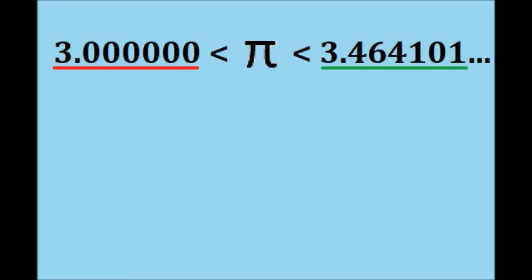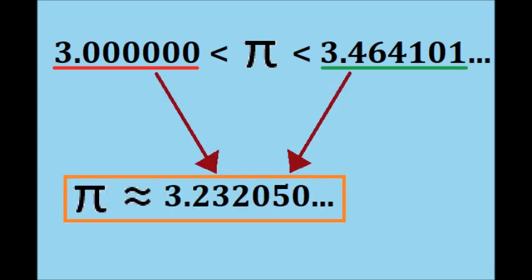Before we conclude, let's revisit these values. The red is our inner perimeter, the lower bound, and the green is the outer perimeter, the upper bound. Knowing that pi is approximately 3.14, it makes sense that it falls between these two bounds. If we average the values, our estimate for pi is approximately 3.23. That's not quite what we're going for, but it's a good start.